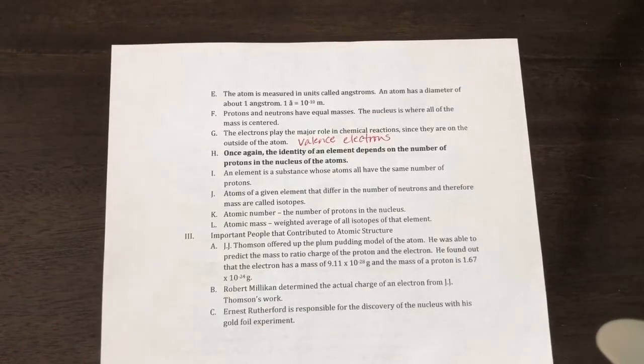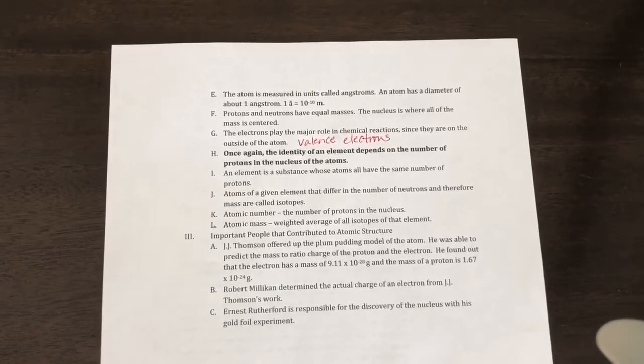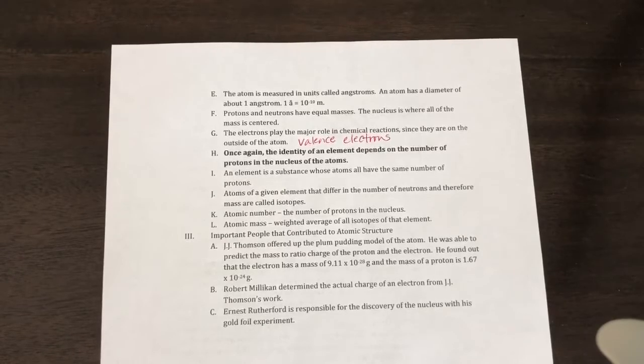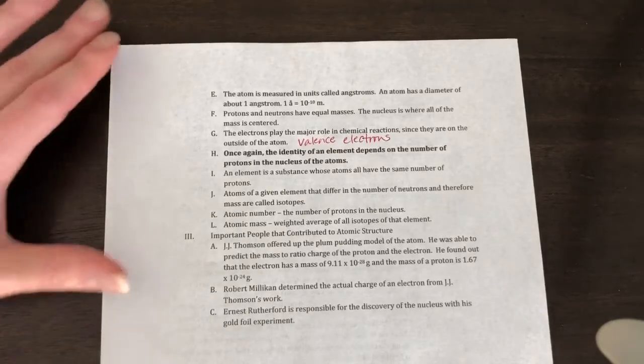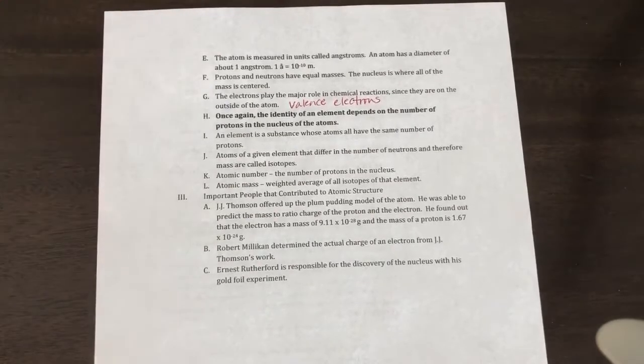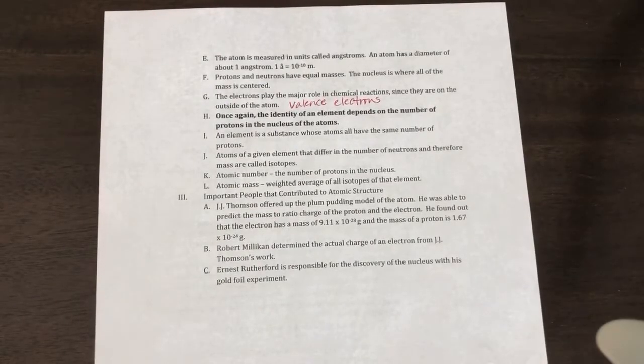We talked about those on our periodic table. Group 1A has one valence electron. Group 2A has 2, 3, 4, 5, 6, 7, 8. You can have a max of 8. Once again, the identity of an element depends on the number of protons in the nucleus. An element is a substance whose atoms all have the same number of protons. Gold atoms all have the same number of protons. Iron atoms all have the same number of protons.